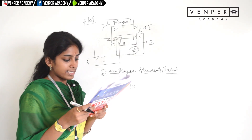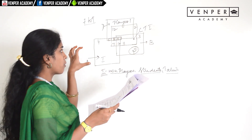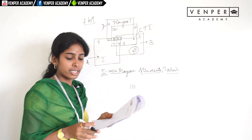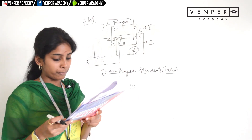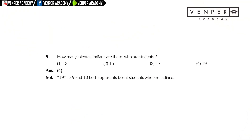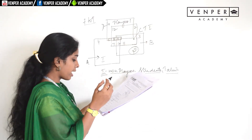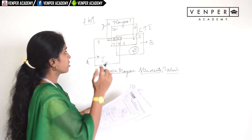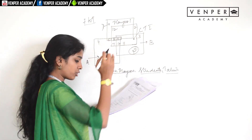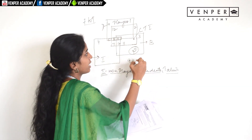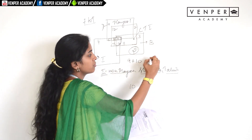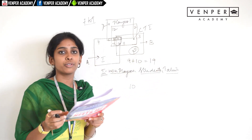Question eight: how many talented Indians are players? They should come under boxes A, C, and D. The numbers 8 and 9 come under this category, so the answer is 17, the second option. Question nine: how many talented Indians are also students? That is 9 plus 10, giving 19. So option four.